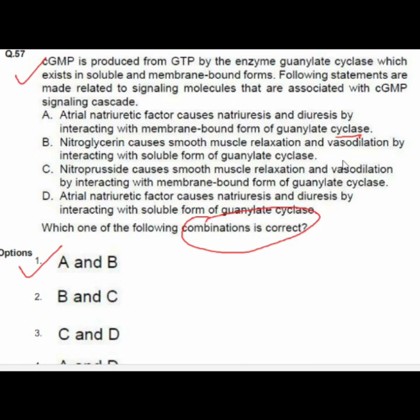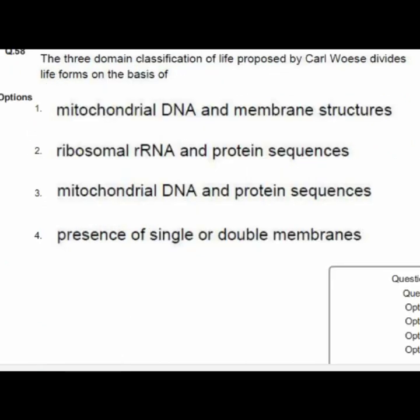Question 58: The three-domain classification of life proposed by Carl Woese divides life forms on the basis of — option 2 is correct — ribosomal rRNA and protein sequences.